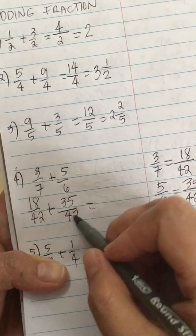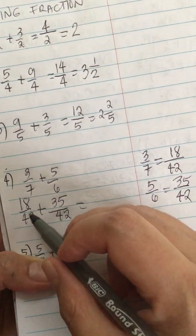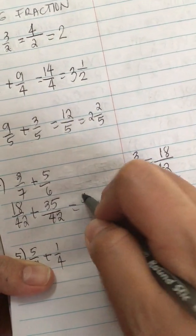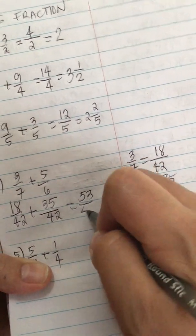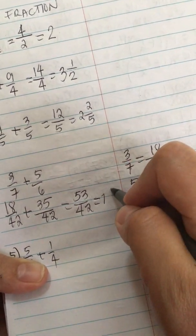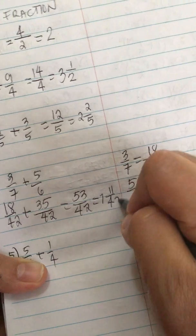Now that we have the same denominator, we can add the numerator. 18 plus 35 is 53 over 42, or in mixed number is 1 and 11 over 42.